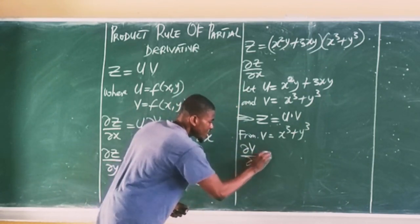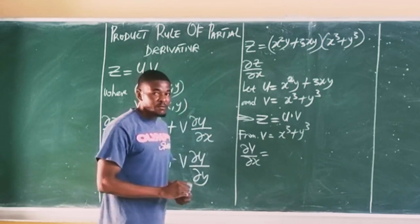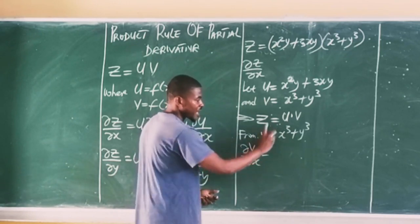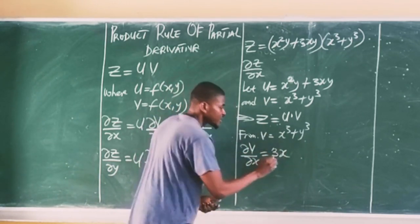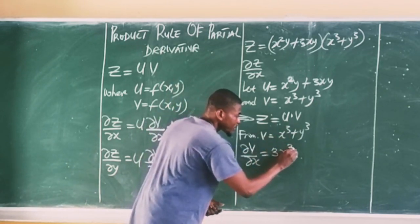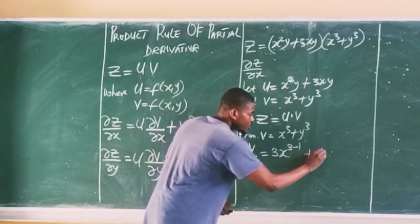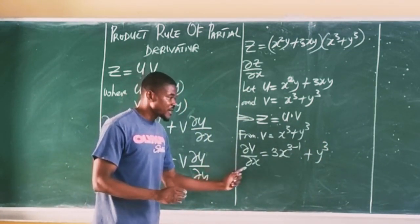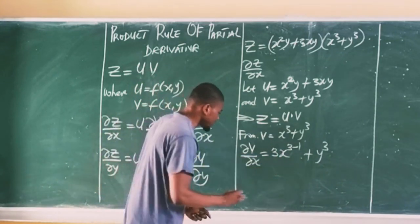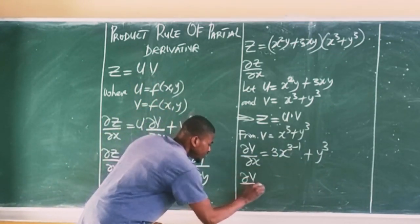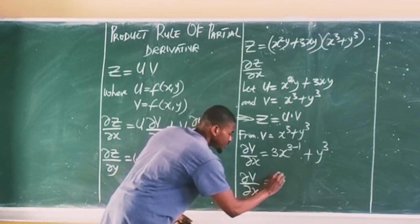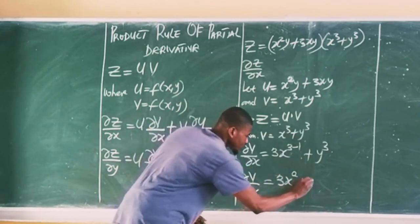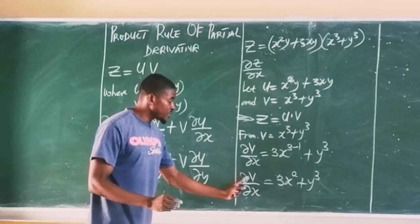Differentiating V partially with respect to X: using the power rule, bring the power down to multiply, so I will have 3 times X, then subtract 1 from the power, giving 3 minus 1, plus Y cubed is held as constant since I am differentiating with respect to X, not Y. So the partial derivative of V with respect to X equals 3X squared plus Y cubed.